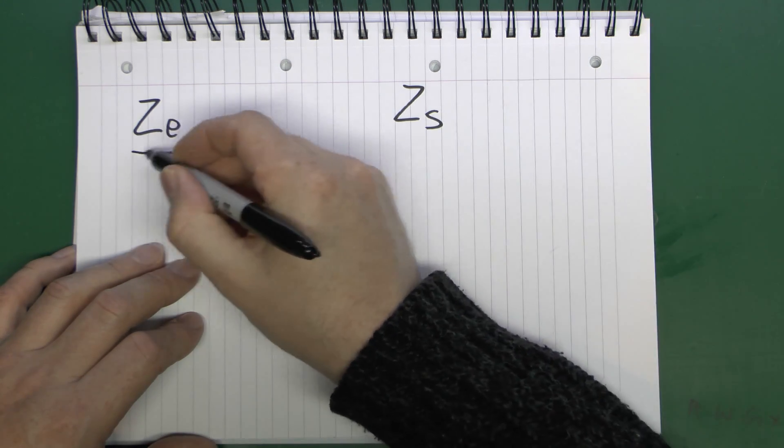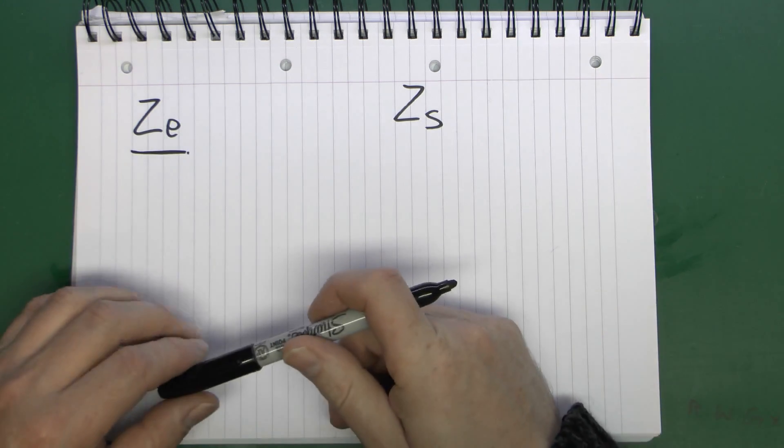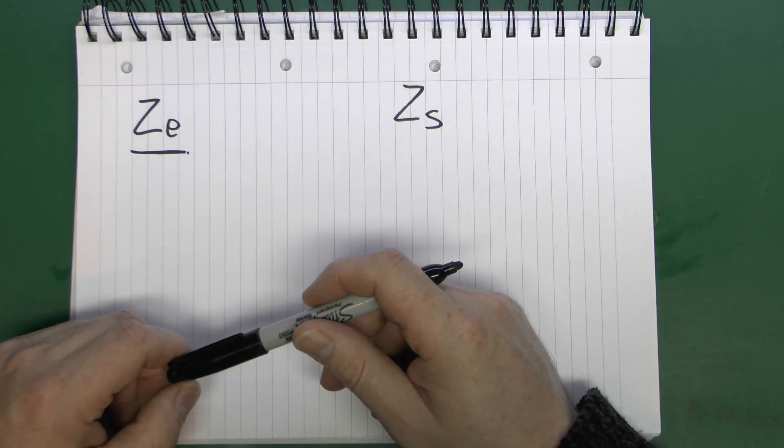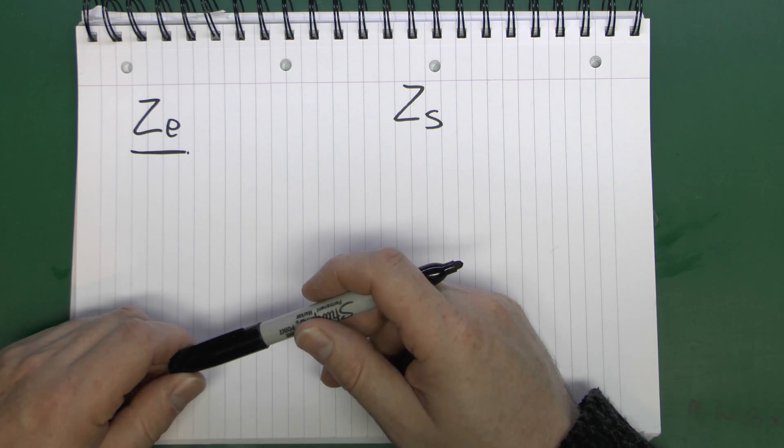But we're talking about the external one here which is the external connection to earth, normally provided by the electricity supplier or it could be an earth electrode in the ground.